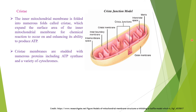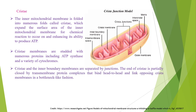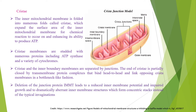Cristae affect overall chemiosmotic function of mitochondria. You can also see the cristae junction. Cristae and the inner boundary membranes are separated by junctions. The end of cristae is partially enclosed by transmembrane protein complexes that bind head to head and link opposing cristae membranes in a bottleneck-like fashion. For example, deletion of the junction protein IMMT leads to a reduced inner membrane potential, impaired growth, and dramatically aberrant inner membrane structures which form concentric stacks instead of the typical invagination.